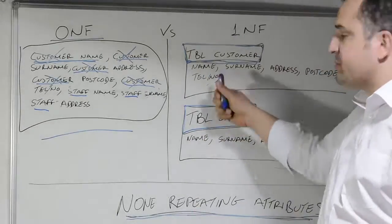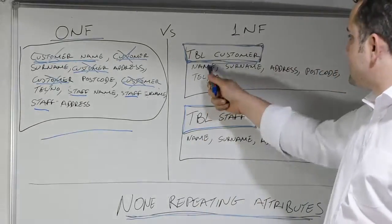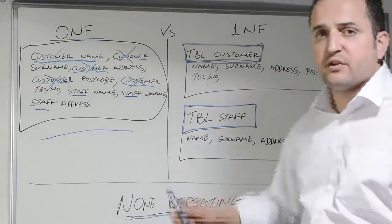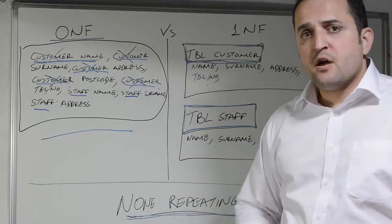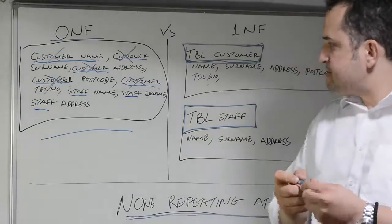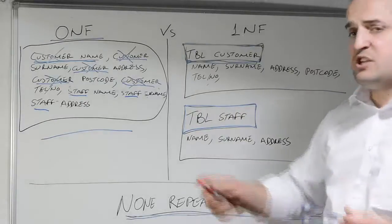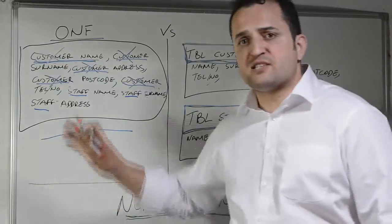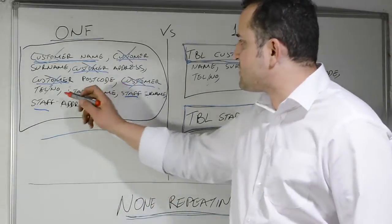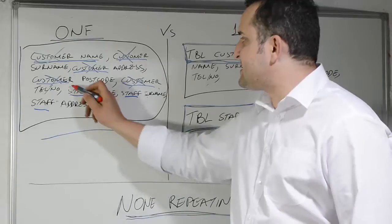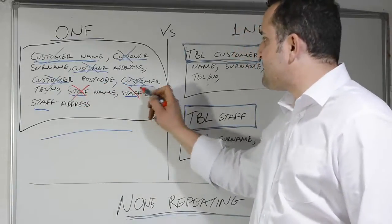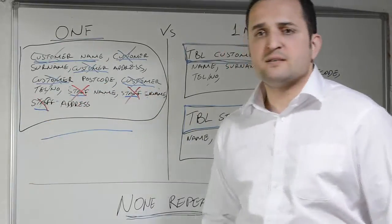We put all the attributes there — just name, surname, address, postcode, telephone number. By following the same process, I continue to normalize the 0NF to 1NF, and I reach a section where it says staff name, staff surname, staff address.